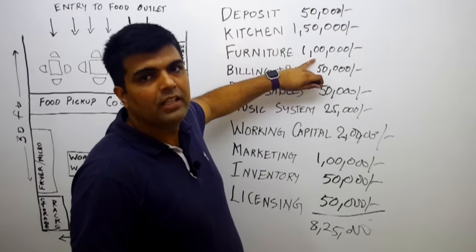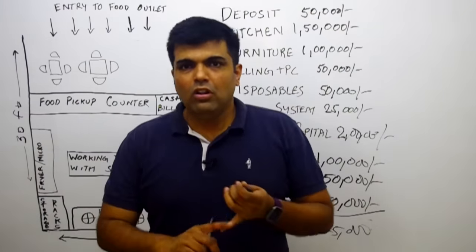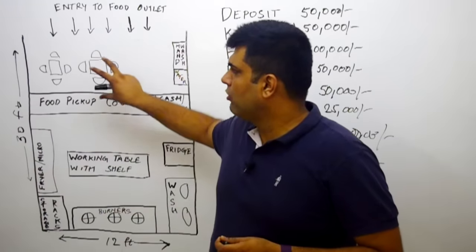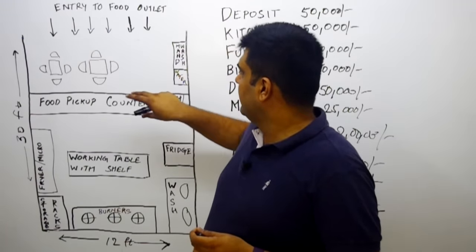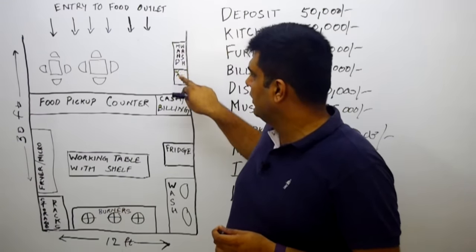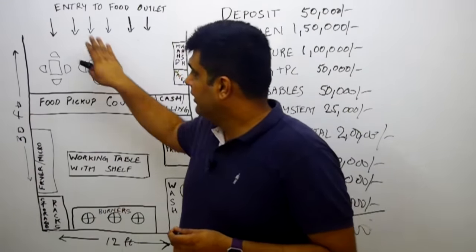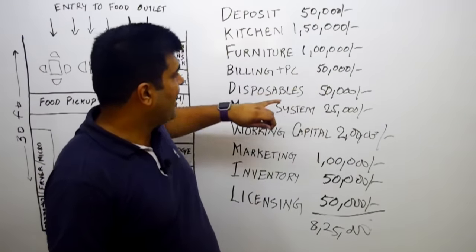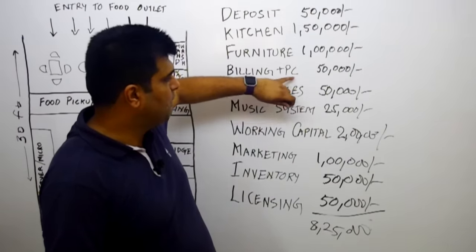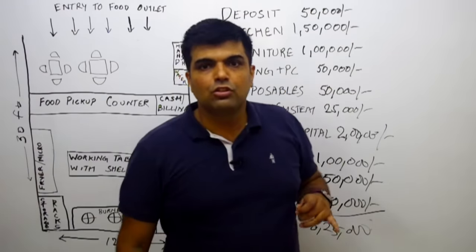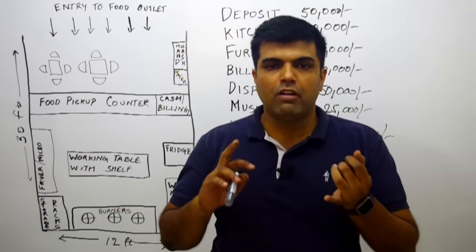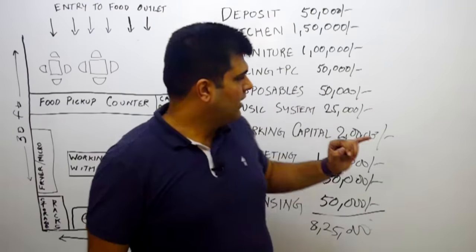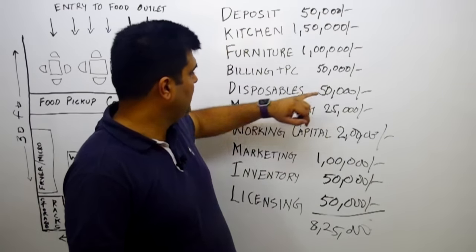Furniture I have kept at around 1 lakh rupees. This covers the pickup counter, tables, chairs, and anything in the seating area — all covered for 1 lakh rupees. Billing plus PC is around 50,000 rupees — you will require a billing machine and a computer to enter data. I have taken a conservative figure of 50,000 rupees.